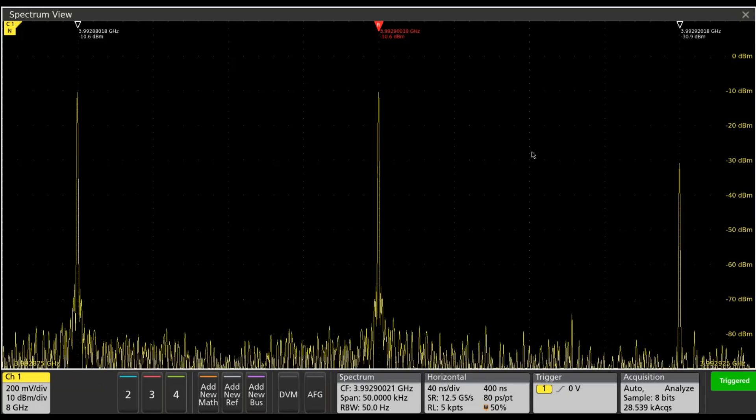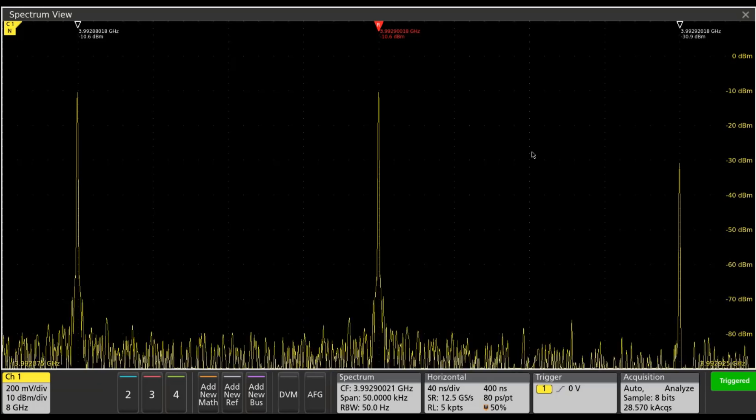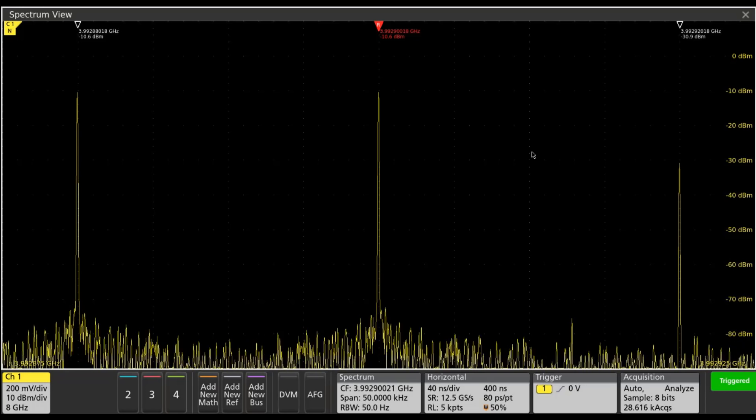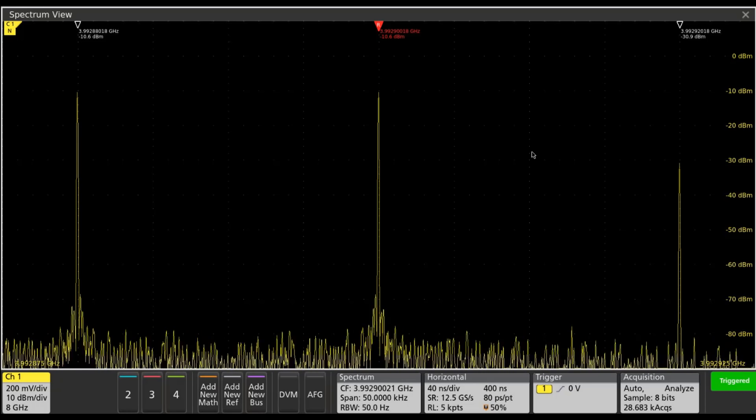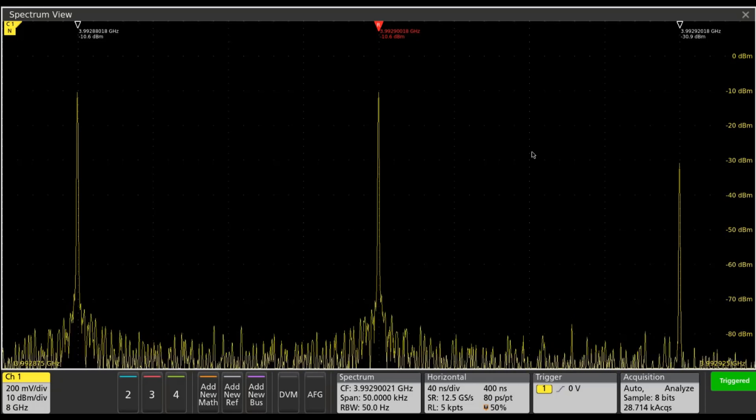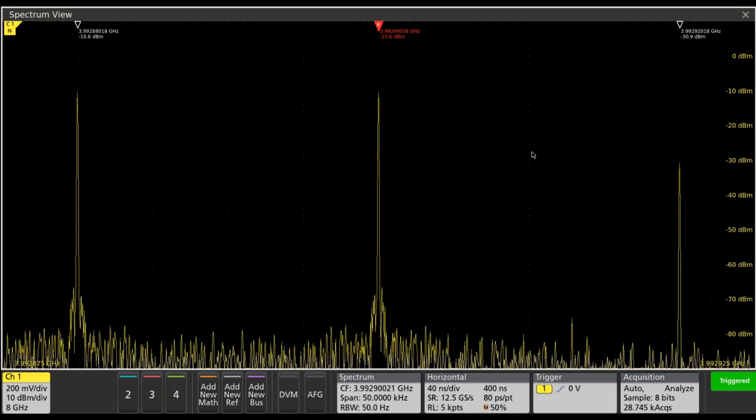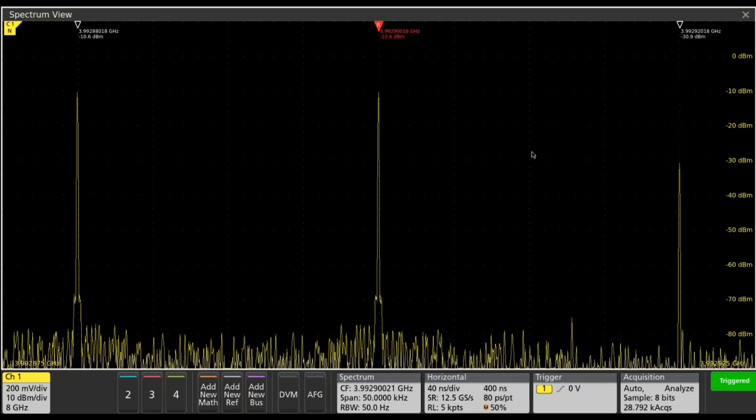What this also shows us is that there's some benefit to using attenuation at the front end of a receiver if the receiver is looking for a low-level signal that might be masked by a third-order intermodulation distortion product produced by signals outside of the frequency range you're looking at.